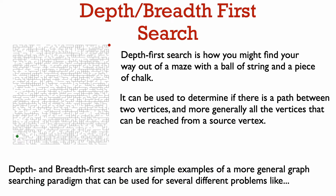Imagine you are put inside a maze at the green dot and you want to find your way to the red dot. To do this, you want to find a path in the maze graph from the green dot to the red dot. These are the kind of problems we will look at today — determining if two vertices in a graph are connected and finding a path between them. Depth-first search is how you might explore a maze with a string and a piece of chalk, marking the passages you take and using the string to backtrack when you reach a dead end. Breadth-first search was first described in a paper from 1959, whose motivation was finding a shortest path out of a maze.